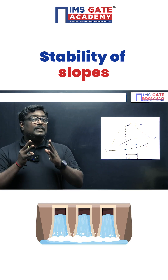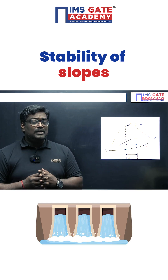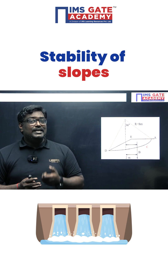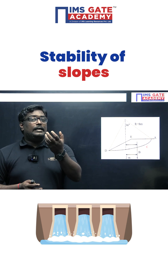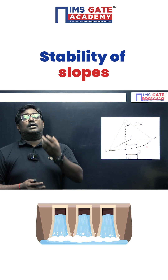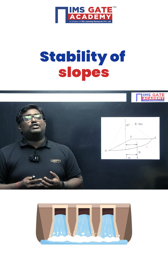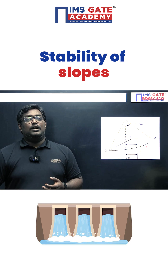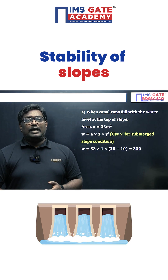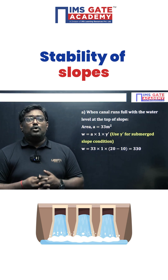Which will be the resisting moment? The resisting moment is due to shear strength, but as phi is zero, the entire resisting moment is due to cohesion. The driving moment is due to the self-weight. So first we have to calculate how to calculate the weight.